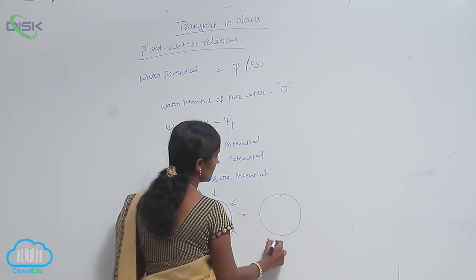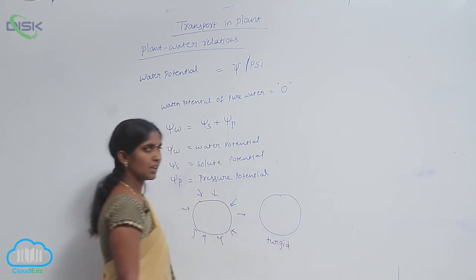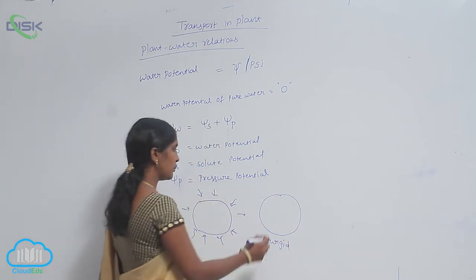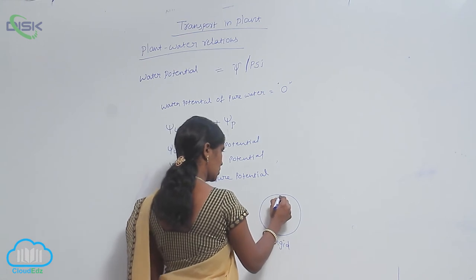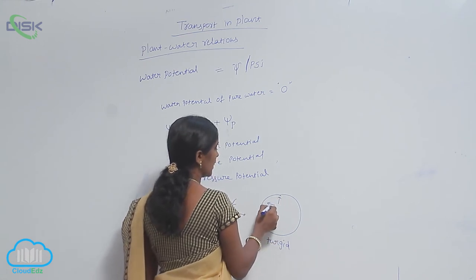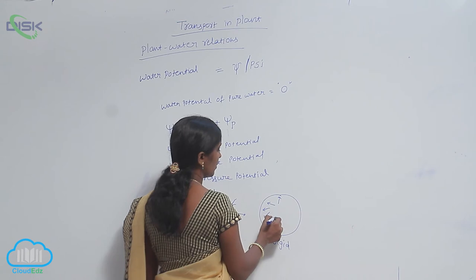Turgid means volume-wise it is increased. Inside of the protoplasm, it shows the pressure against the turgid wall.